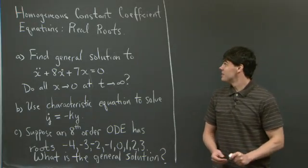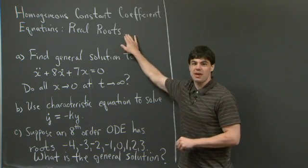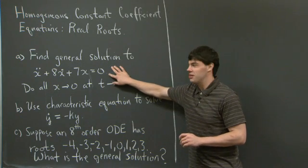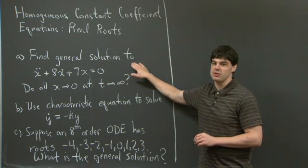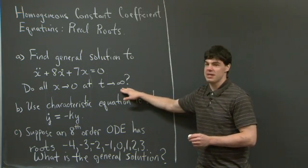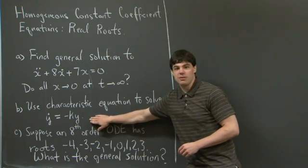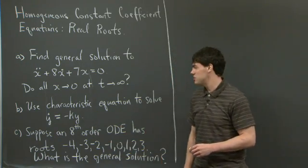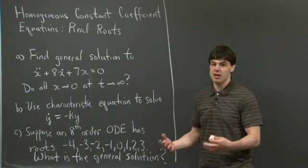Hi everyone, welcome back. Today we're going to take a look at homogeneous equations with constant coefficients, specifically the case where we have real roots. We'll start the problem off by looking at the equation x double-dot plus 8x-dot plus 7x equals 0, and we're asked to find the general solution. We also have the question: do all the solutions go to 0 as t goes to infinity? And then for part b, we're going to take a look at the differential equation y-dot equals negative ky. This is the same equation we've seen in past recitations, and we're just going to show that we can use this method to solve it and obtain the same result.